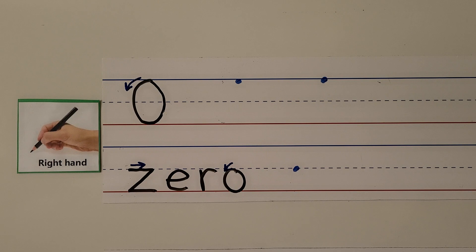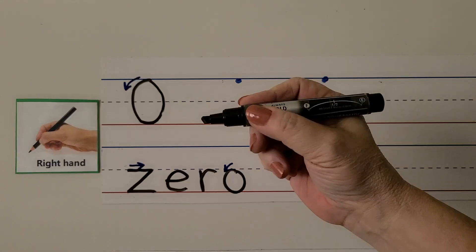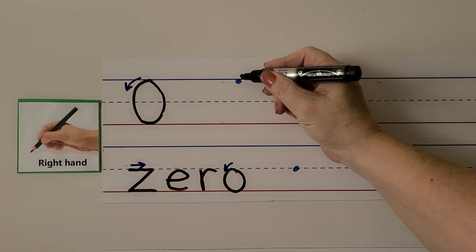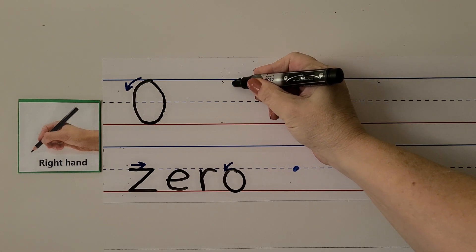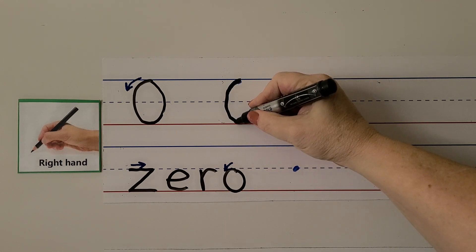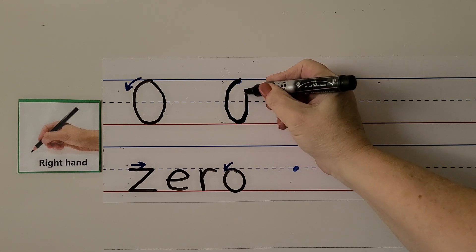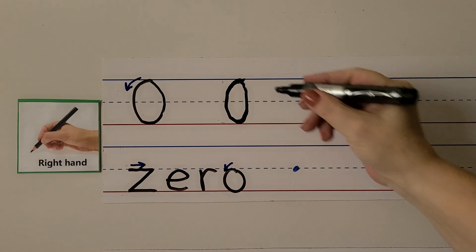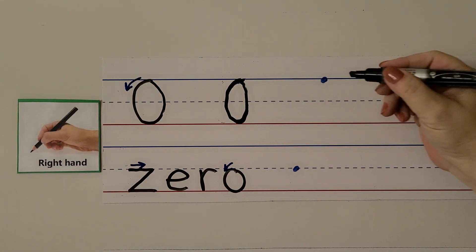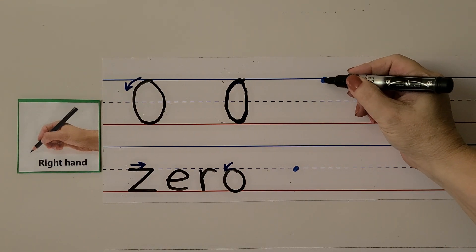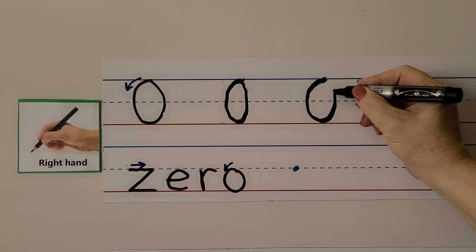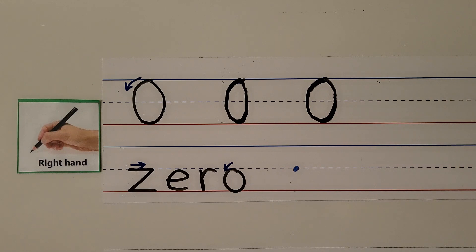We can write it with our right hand. We hold the pencil like this. We start at the top, we go away from our hand, then back towards our hand, and around to the top. It looks like a skinny stretched out circle. Let's try it again. With our right hand, we go around away from our hand, then back towards our hand, then back up to the top.